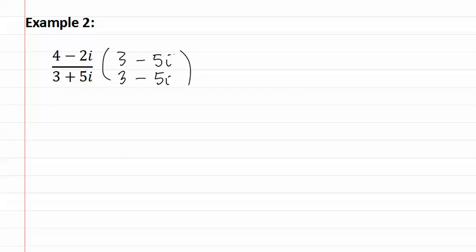Now we need to FOIL both the top and the bottom. This gives us twelve minus twenty i minus six i plus ten i squared.